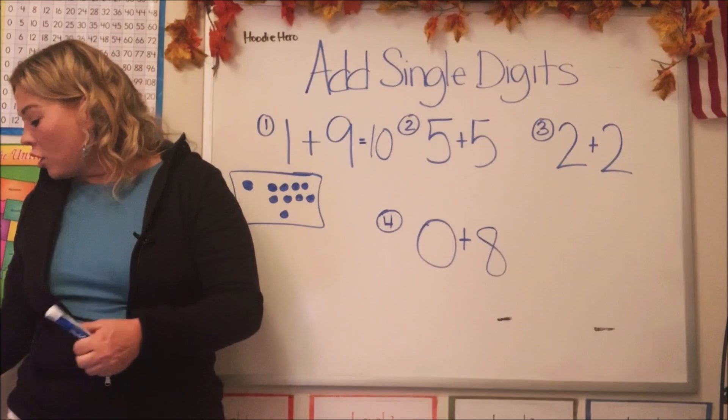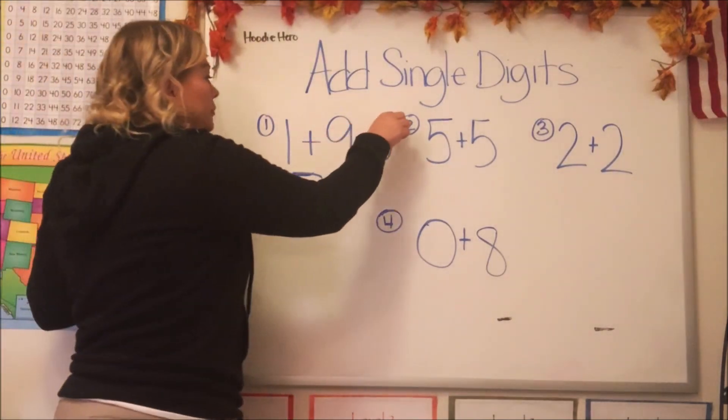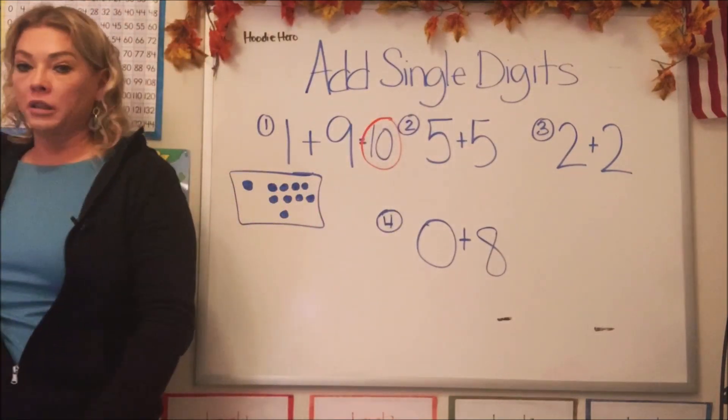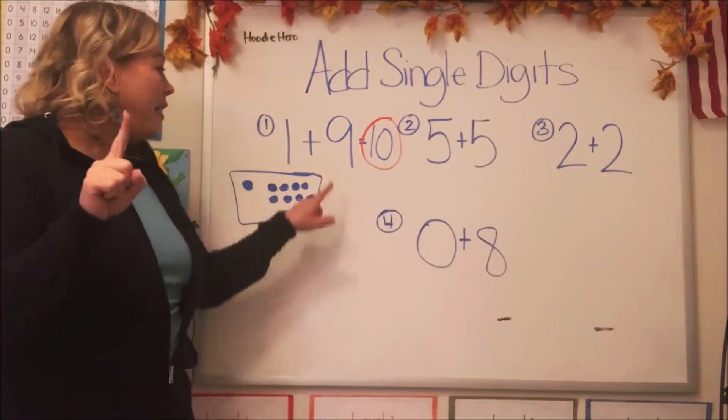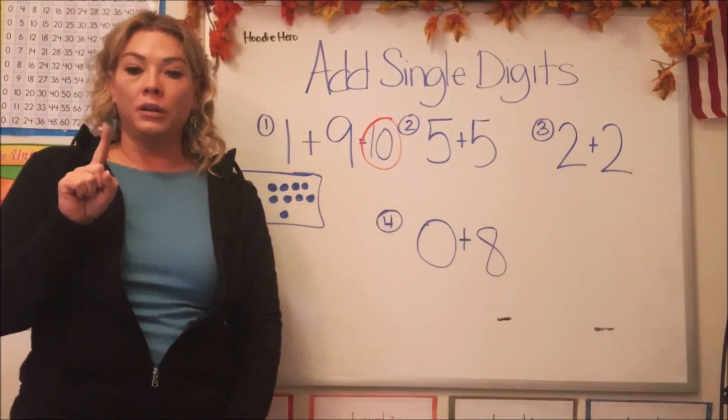See how we did that? When you use a visual, you can see it. Now what if we would have done that on our fingers? We have one and now we're going to add nine. Let's use nine fingers and count it out.